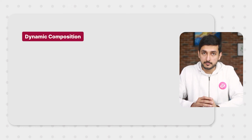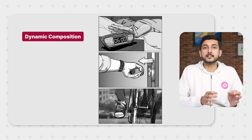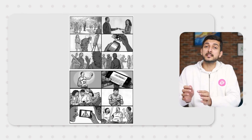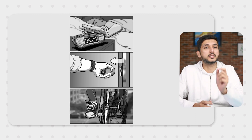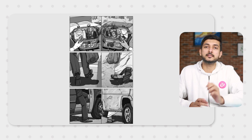Drawing well is important, but it's also important to make dynamic compositions — using different perspectives and camera angles to show things. Show only the key incidents of the story in the frames. If the composition is staged, it becomes a boring storyboard. Staged means all the characters and objects are drawn in one-point perspective with static cameras. Try to observe storyboards on Pinterest and see how storyboards for animated movies and action films are created. Incorporate these points and you will see a difference in your work.